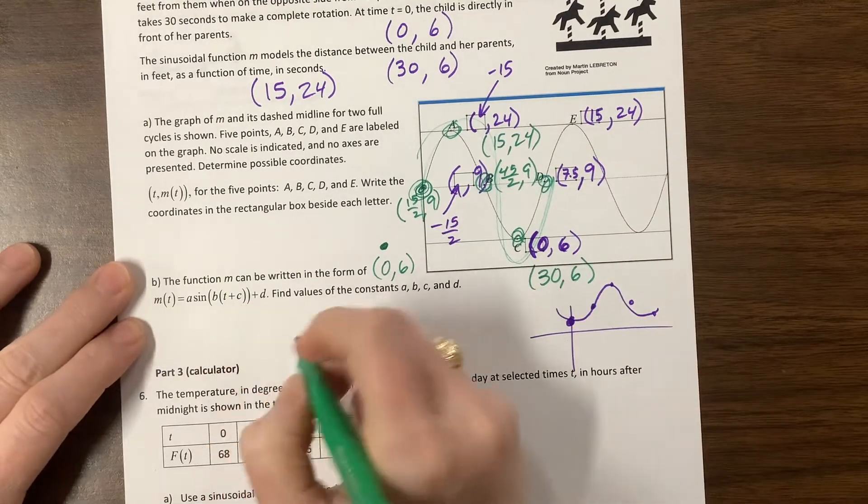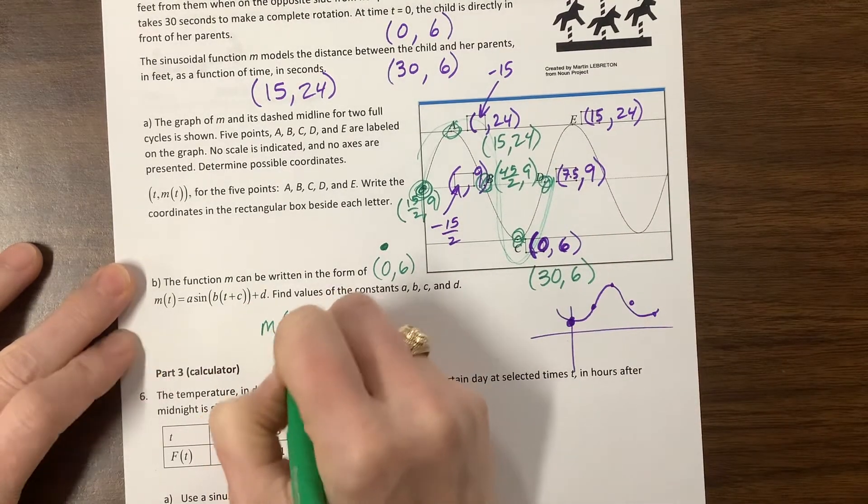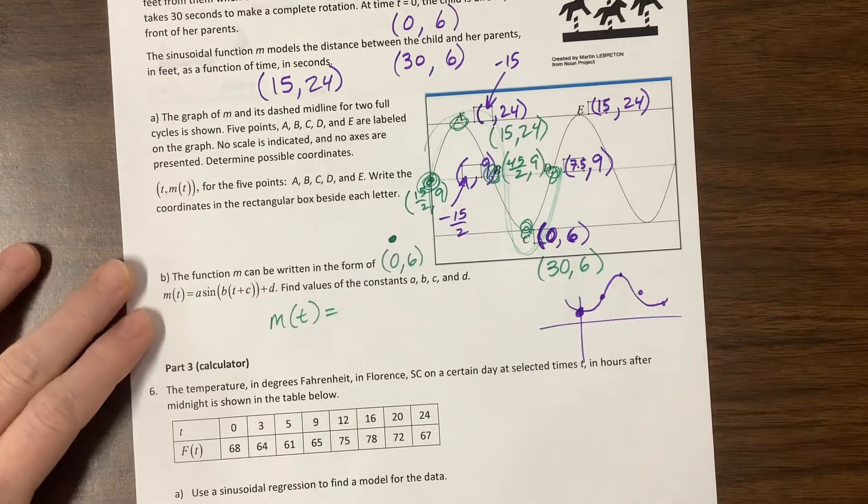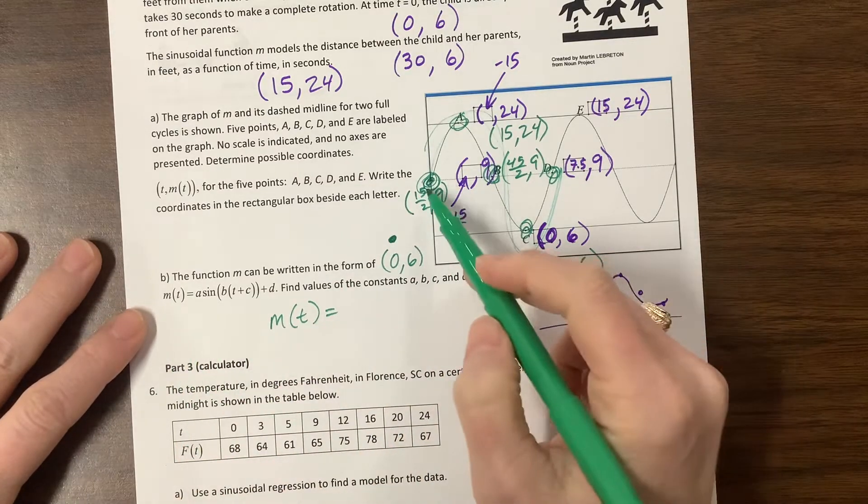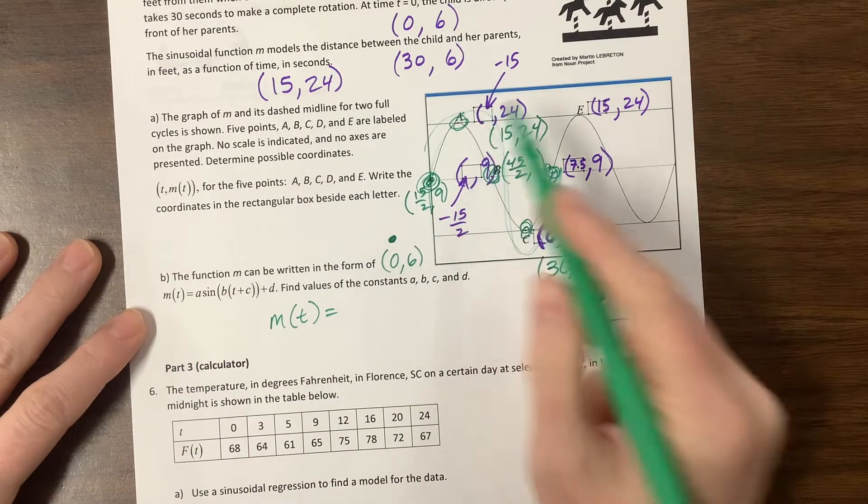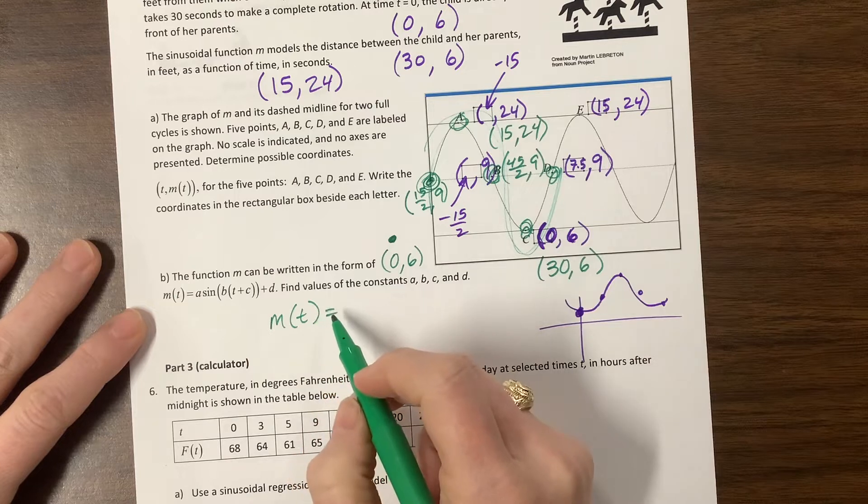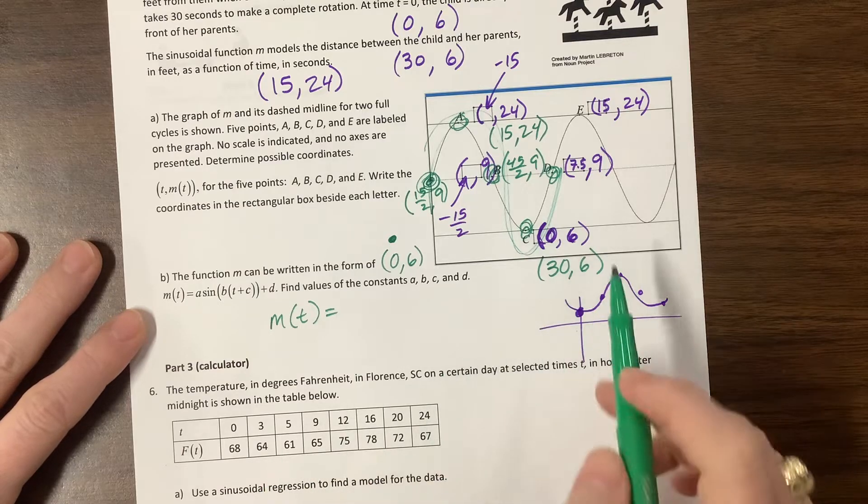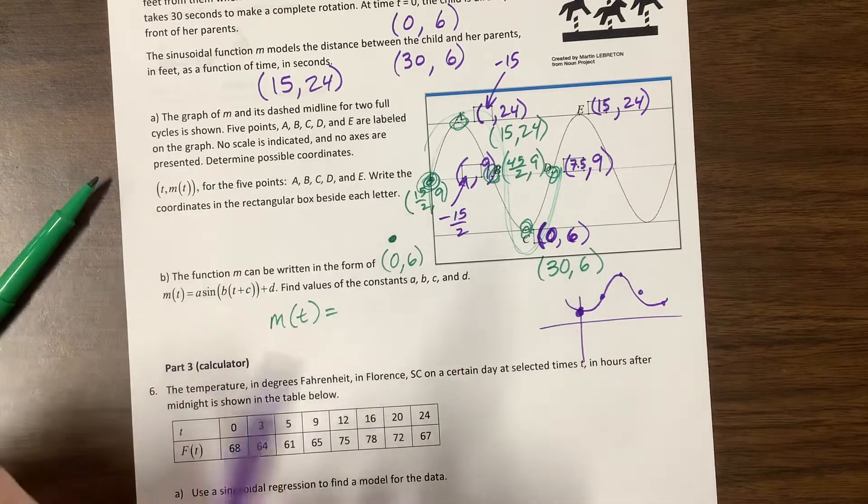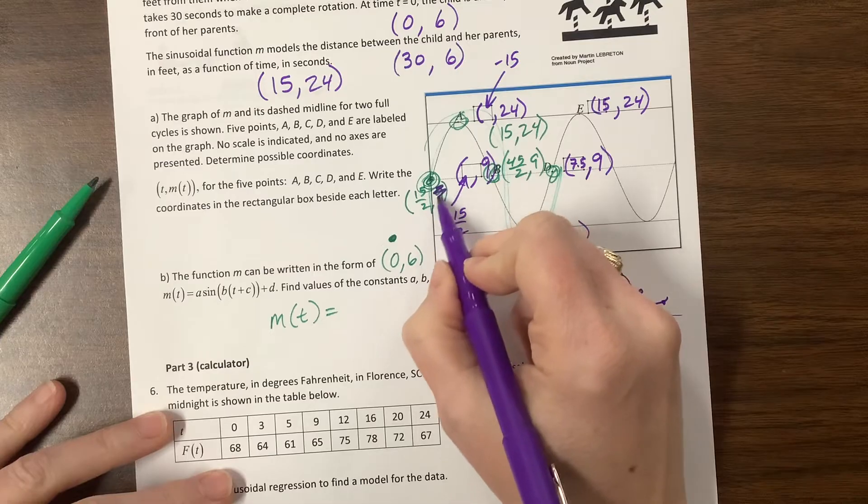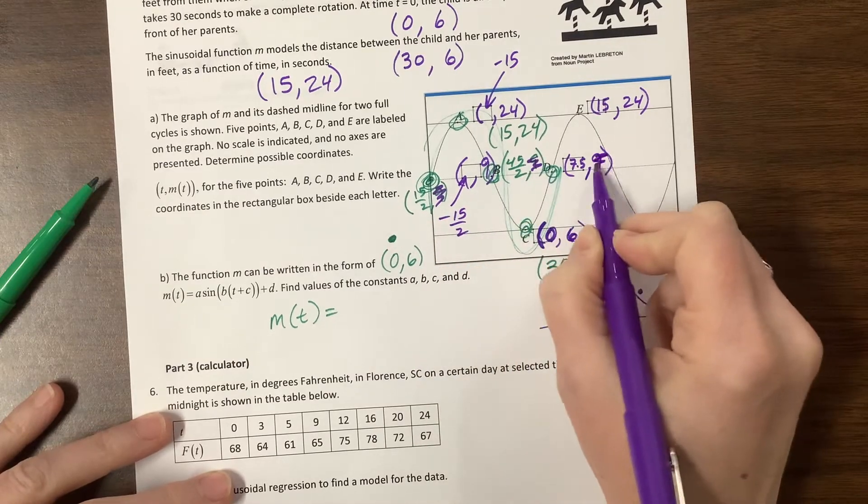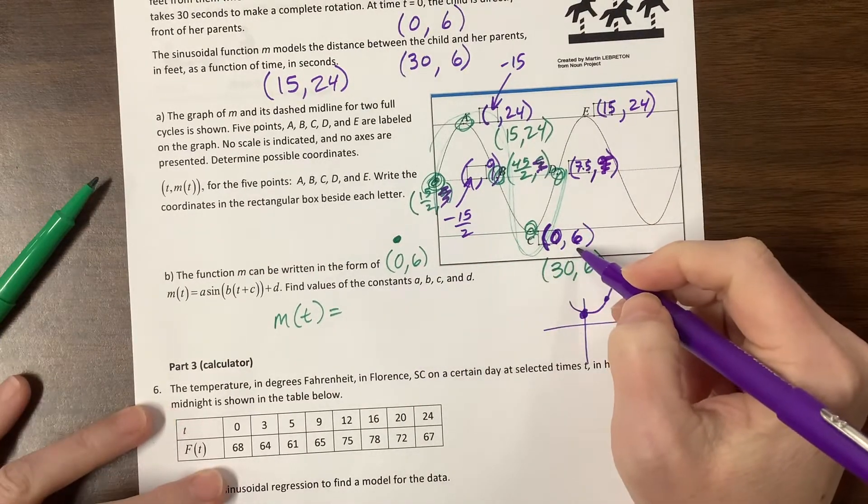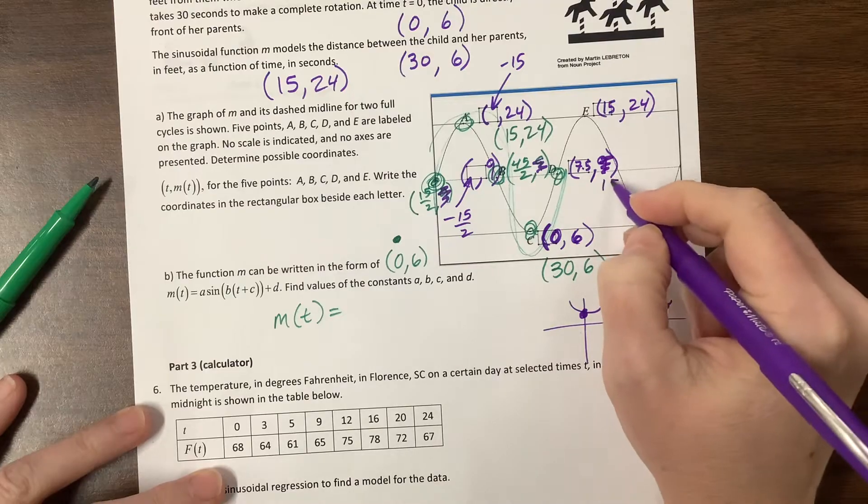And so my M of T would equal my amplitude. I go from nine to 24, what did we just say that was? Did I do this wrong? Oh, I sure did. Did y'all catch what I did? All those nines. Wrong.